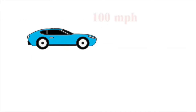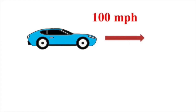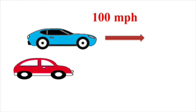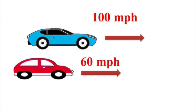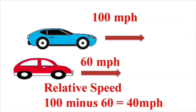But first we need to look at classical relativity. Imagine a car driving along the road in a certain direction, moving at 100 miles an hour. Now imagine another car driving alongside doing 60 miles an hour in the same direction. So the relative speed of the blue to the red will be 100 minus 60, which equals 40 miles an hour.